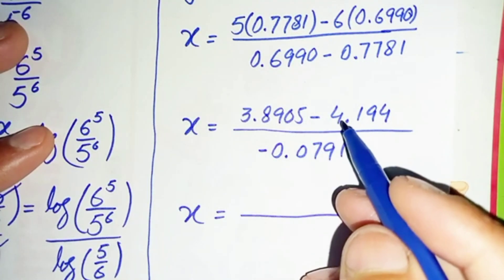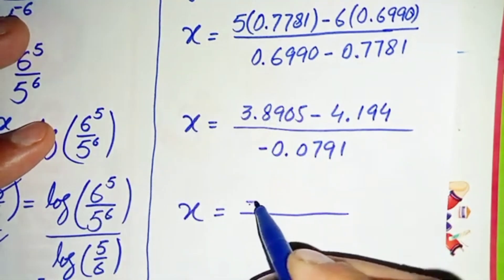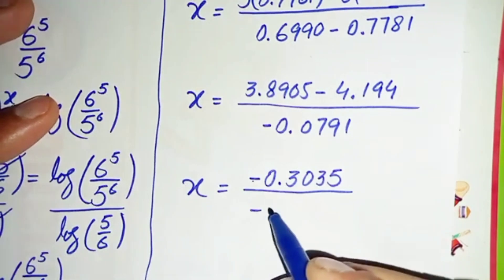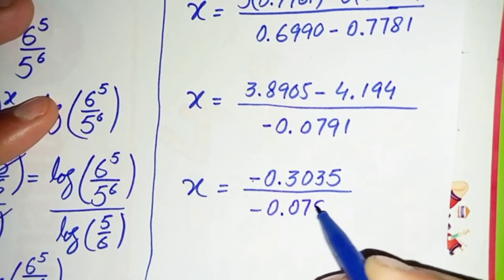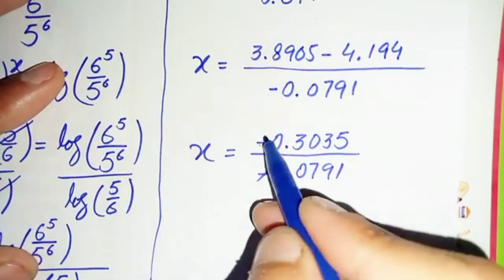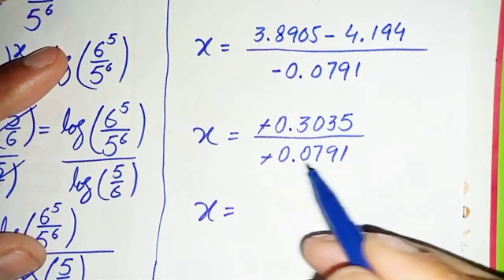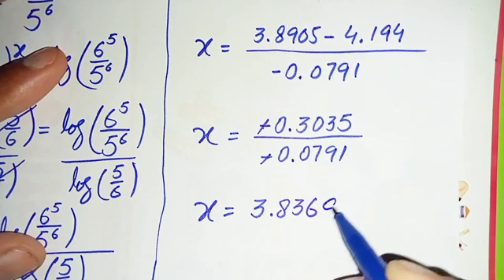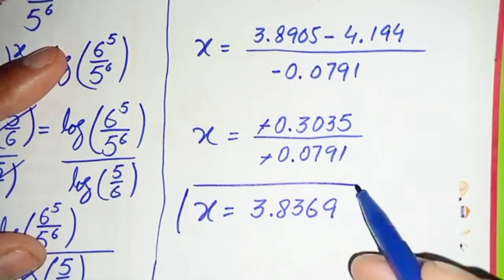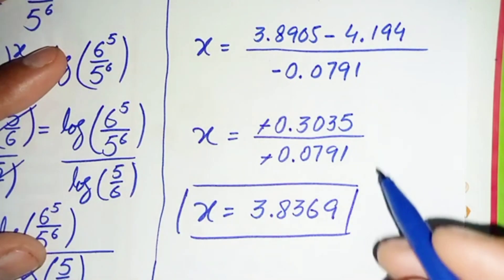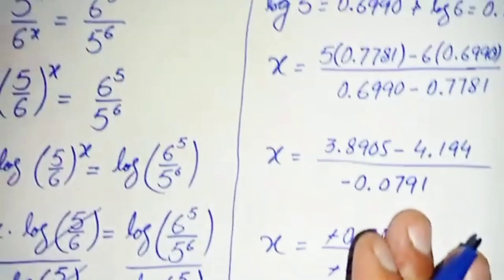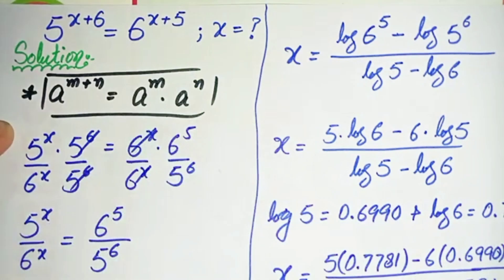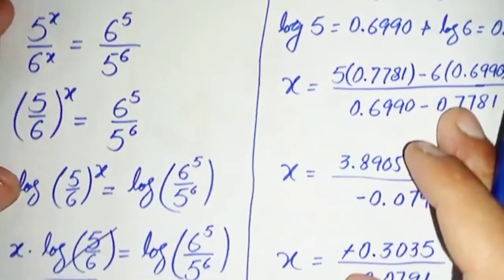Subtracting, we get a negative number in the numerator: negative 0.3035, divided by negative 0.0791. The two negatives cancel, so x equals 0.3035 divided by 0.0791, which gives x approximately equal to 3.8369 up to 4 decimal places. That is our final answer. If you liked this video, don't forget to subscribe to my YouTube channel. Thanks for watching!